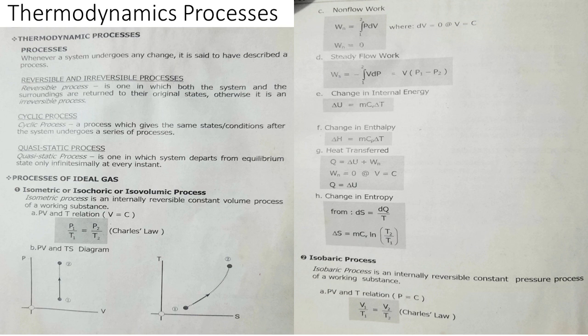What is a cyclic process? A cyclic process is one which gives the same state conditions after the system undergoes a series of processes. Quasi-static process is one in which the system departs from equilibrium state only infinitesimally at every instant.